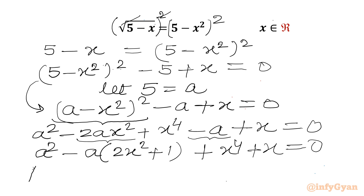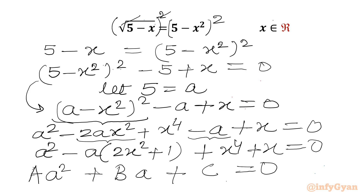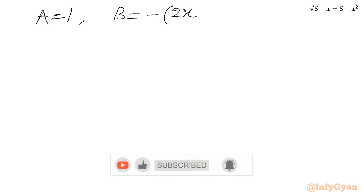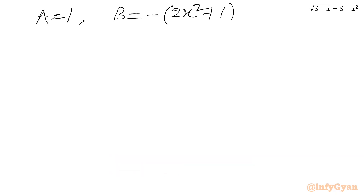Now I will treat this as a quadratic equation in A and compare it with A² + BA + C = 0. Then our coefficients are: leading coefficient equals 1, B equals minus(2x² plus 1), and C equals x⁴ plus x.